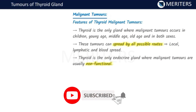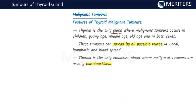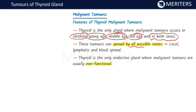About the malignant tumors: the thyroid is unique because it is the only gland where malignant tumors occur in children, young age, middle age, old age, and in both sexes. These tumors can spread by all possible routes — local invasion, lymphatic spread, as well as blood spread. Thyroid is the only endocrine gland where the malignant tumors are usually non-functional, so you hardly see any hyperthyroid state.